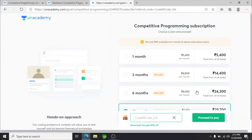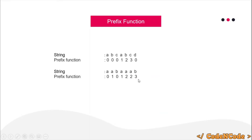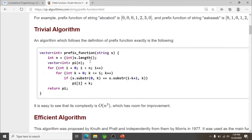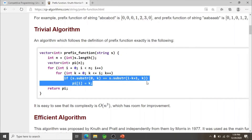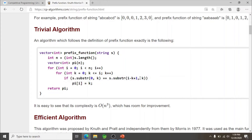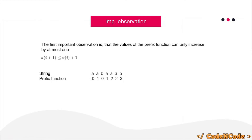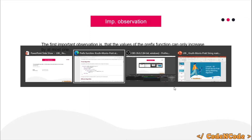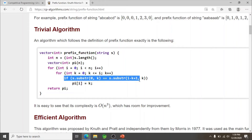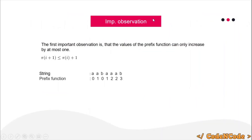Now that we understand the working of the prefix function, let's look at improving it. The most expensive operation is comparing two substrings, which requires O(n) time since we are not using hashing. This gives an extra n factor in the overall complexity. The question is: can we improve this comparison? We will try to come up with an algorithm where we do not have to compare substrings directly.